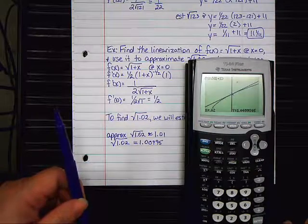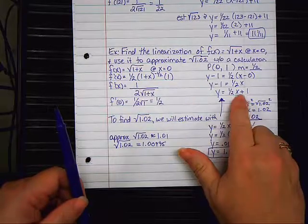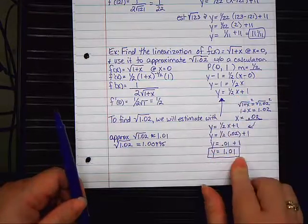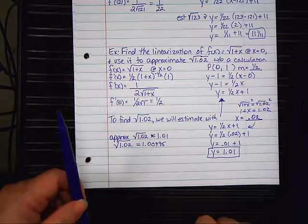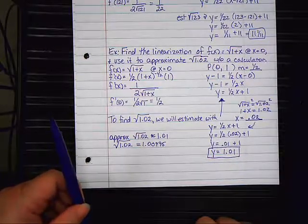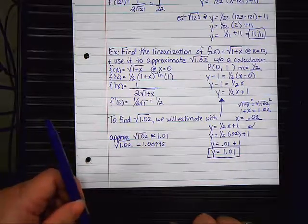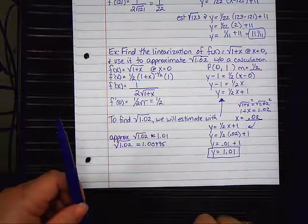How easy was it to do the math with that, plugging in .02? Very easy. Without a calculator, can't do that at all. That's why the line is so important. The line gives us an estimate when we can't do it by hand in the curve.